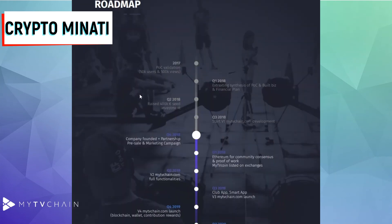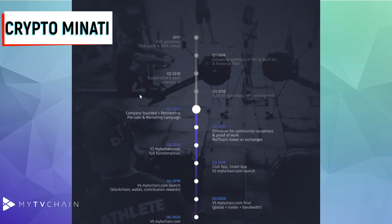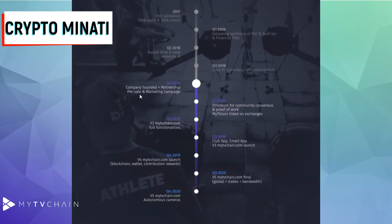Here is the roadmap, which you can see on screen right now. Quarter four 2018 through quarter one 2019 covers Ethereum community consensus and proof of work. MyTV Chain will then be listed on exchanges.